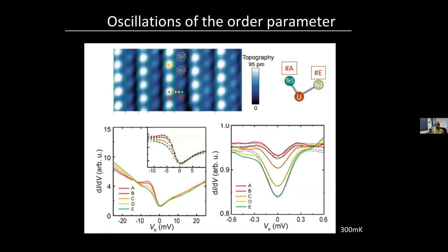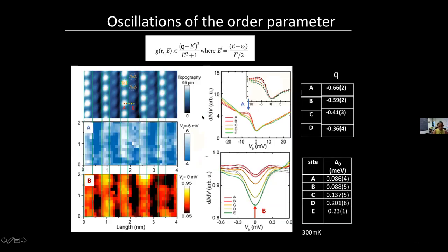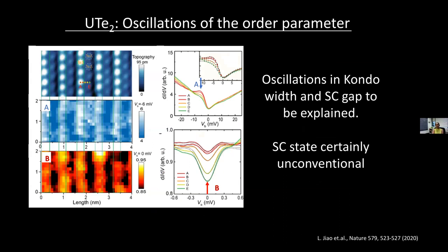An interesting observation: both the Kondo feature close to E_F and the superconducting gap change in magnitude as you go across the sample within one unit cell. This kind of change in the Kondo resonance was seen in another heavy fermion compound, uranium ruthenium two silicon two, though I'm not exactly sure what this comes from — it might just come from different orbitals coupling to the tip. From all the data shown so far, it looks like the superconducting state is unconventional.